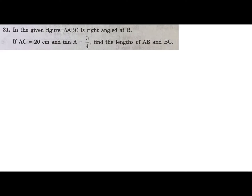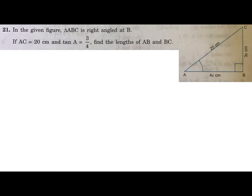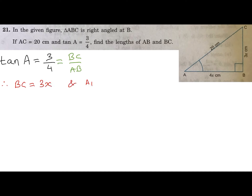The next question: in the given figure, triangle ABC is right-angled at B, AC is 20 centimeters, and tan A = 3/4. Find the lengths of AB and BC. Since tan A = 3/4, that is the ratio of opposite side upon adjacent side, BC upon AB. So we can write BC as 3x and AB as 4x.